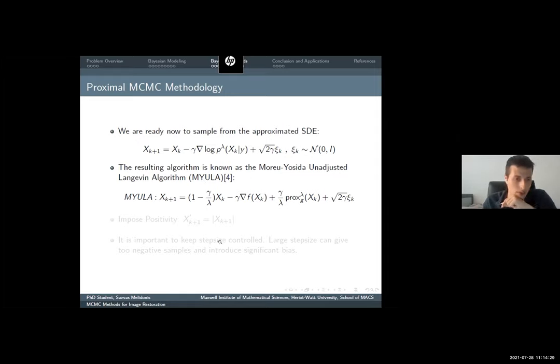However, as I promised you, we have still the issue of the positivity constraint. In our research, we impose positivity by taking the absolute value here. However, I would like to give a word of caution, because gamma and lambda are quite important. We need to keep them controlled because they are dependent.